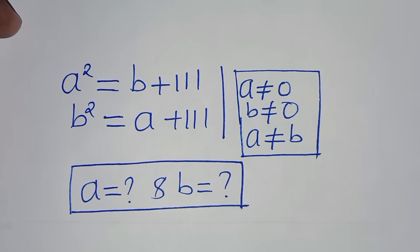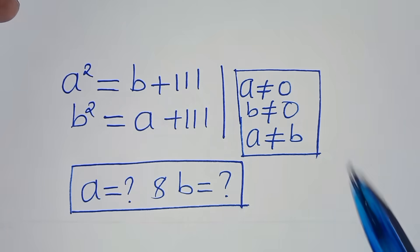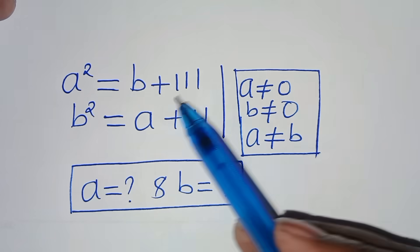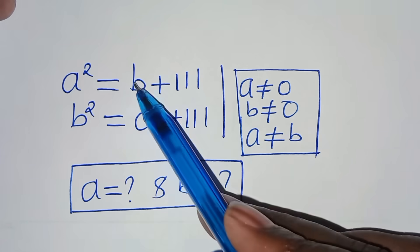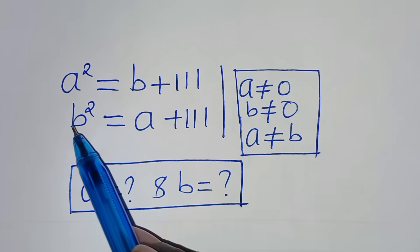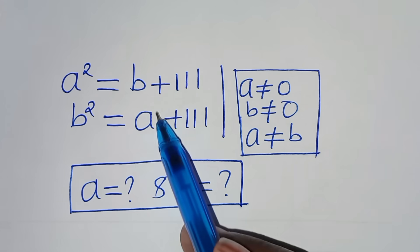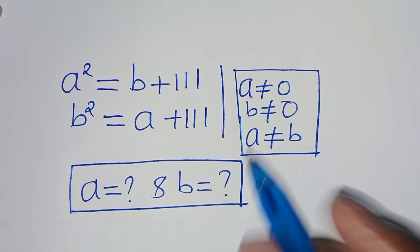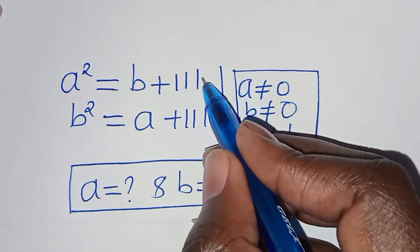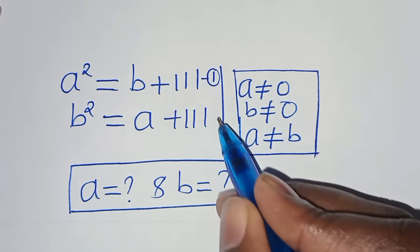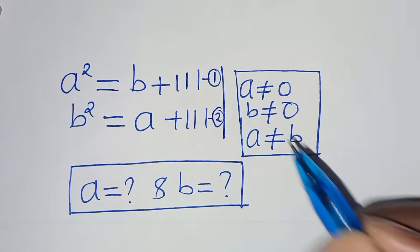Hello everyone, you are welcome to solve this nice algebra problem, which is a squared equals b plus 111, and then we have b squared equals a plus 111. Let's call this equation 1 and equation 2.